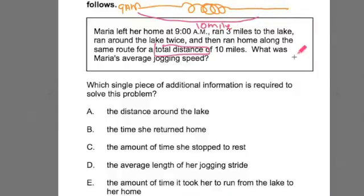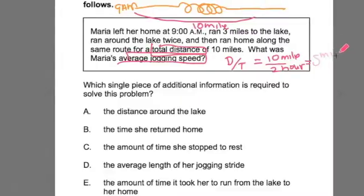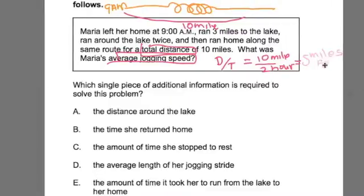Now what are we trying to find out? What's the average jogging speed? Well, if we're trying to find average speed, wouldn't that be whatever the distance is divided by time? Because if she ran 10 miles, which we know, and she did it in two hours, we could say her average speed was five miles per hour. So in order to solve this problem and get to that average speed, we need to know how long it took her.